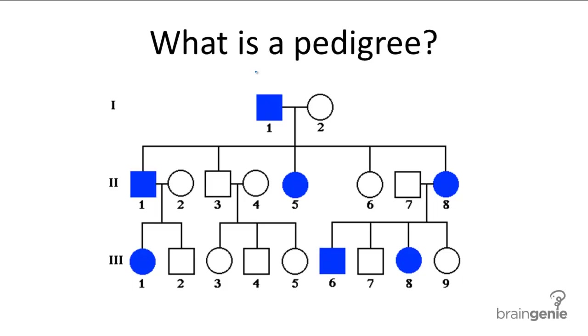A pedigree shows the phenotype of a specific trait for every member of a family in a family tree. And this would be a typical pedigree chart.